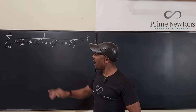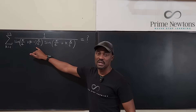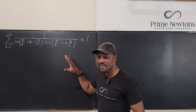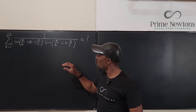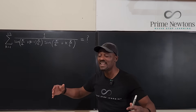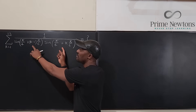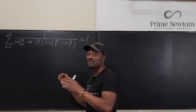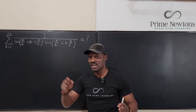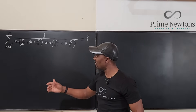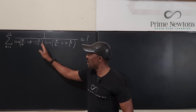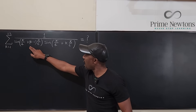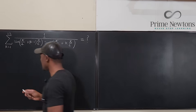I said, why is this argument so weird and why is that argument so weird? Whenever you're multiplying trig functions it's harder to deal with — it's better if you're adding them, especially when it comes to integration. So I thought, there has to be a way for me to make this become a sum.